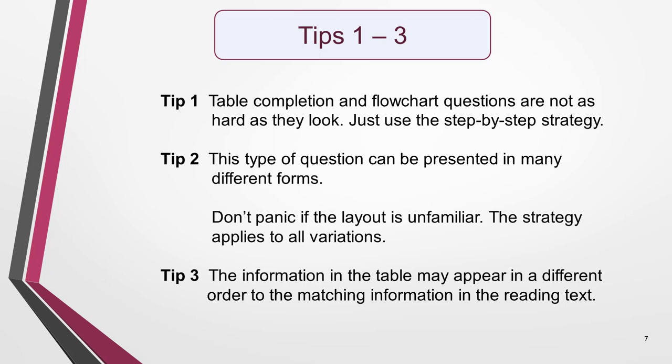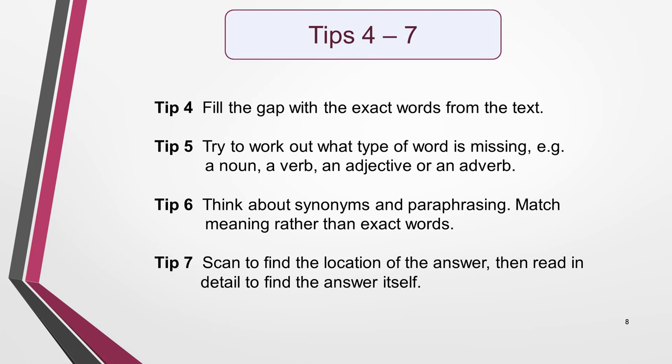Tip 3: The information in the table may appear in a different order to the matching information in the reading text. It's in flowchart questions that the information is most likely to come in order in the text. Tip 4: Fill the gap with the exact words from the text. Don't use synonyms or your answer will be marked incorrect. Tip 5: When studying the table, try to work out what type of word is missing — for example, a noun, a verb, an adjective, or an adverb. This will help you to find it more quickly. Tip 6: Always be thinking about synonyms and paraphrasing. Look for matching meaning rather than exact word matches when comparing the information in the table and in the text.